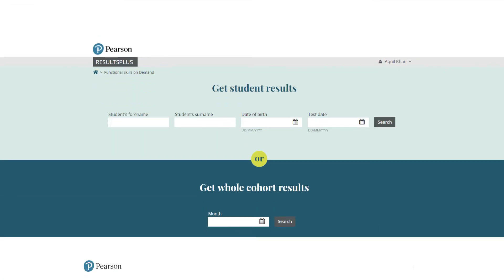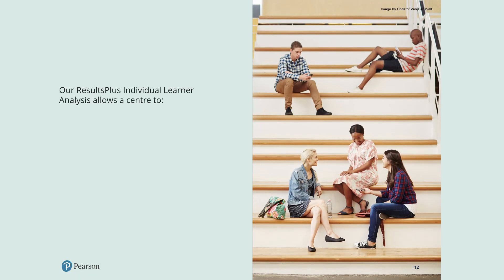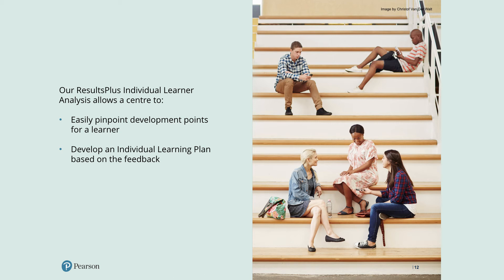Having logged in, this is the screen that you will see. Under 'Get Student Results,' you can search using the student's first name, surname, date of birth, or the date of the test. Our Results Plus individual learner analysis allows a center to easily pinpoint development points for a learner and helps develop an individual learning plan based on the feedback.